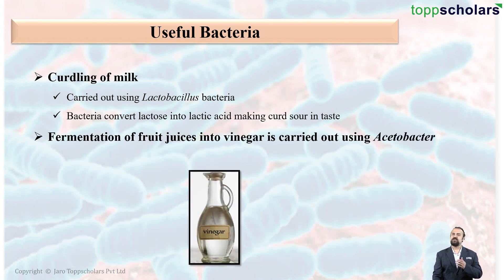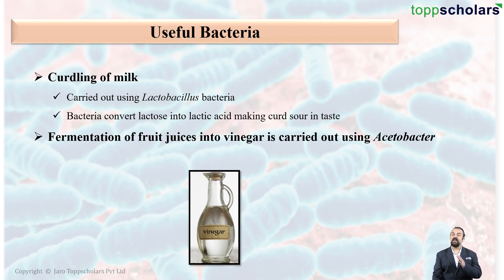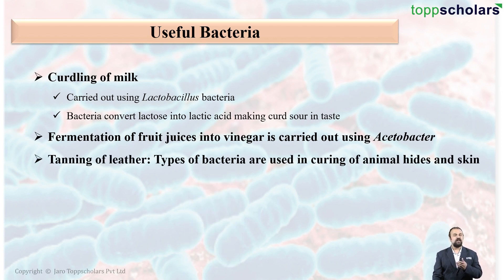Fermentation of various fruit juices is used in the production of vinegar, and the bacteria used in this case is known as acetobacter. Also, tanning of leather is a very important process, and this tanning is done with the help of bacteria which are used in the curing of animal hides and skin.